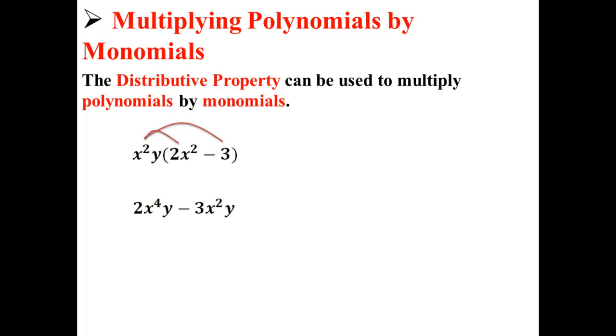Again, we can distribute the x squared y across the numbers in the parentheses to get an answer of 2x to the fourth y minus 3x squared y.